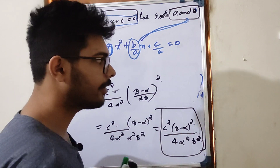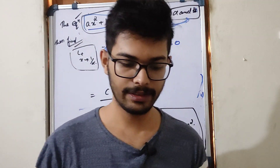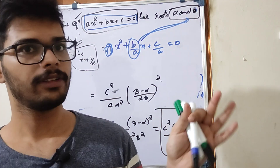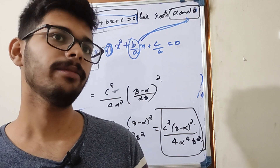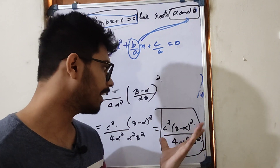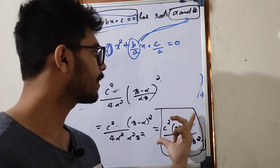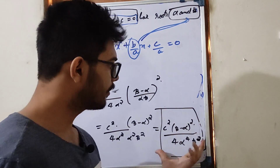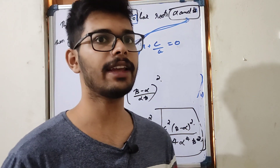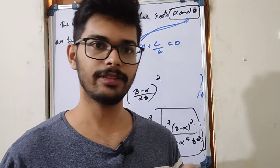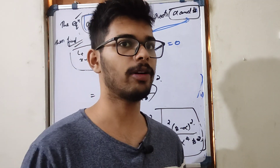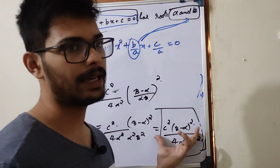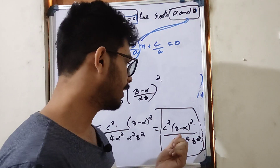This is the final answer. We can do this. Let's explain the basic idea. That's the final answer: c squared times (beta minus alpha) squared divided by 4 into alpha raised to 4 times beta raised to 2.